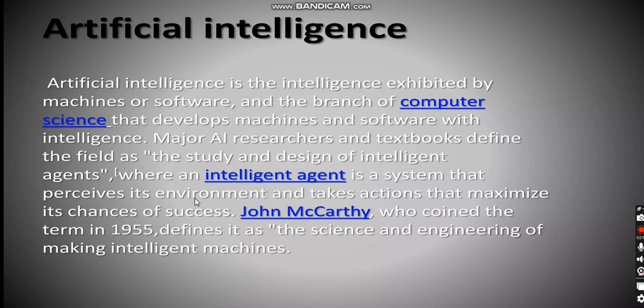Artificial intelligence or AI is the intelligence exhibited by machines or software and the branch of computer science that develops machines and software with intelligence. Major AI researchers and textbooks define the field as the study and design of intelligent agents. Where an intelligent agent is a system that perceives its environment and takes actions that maximize its chances of success.